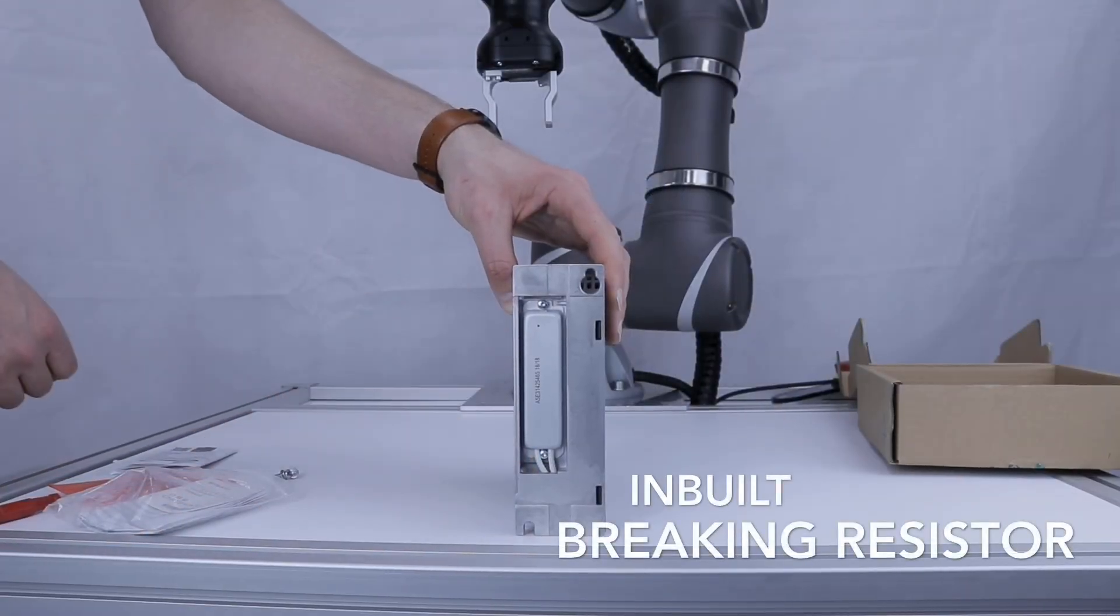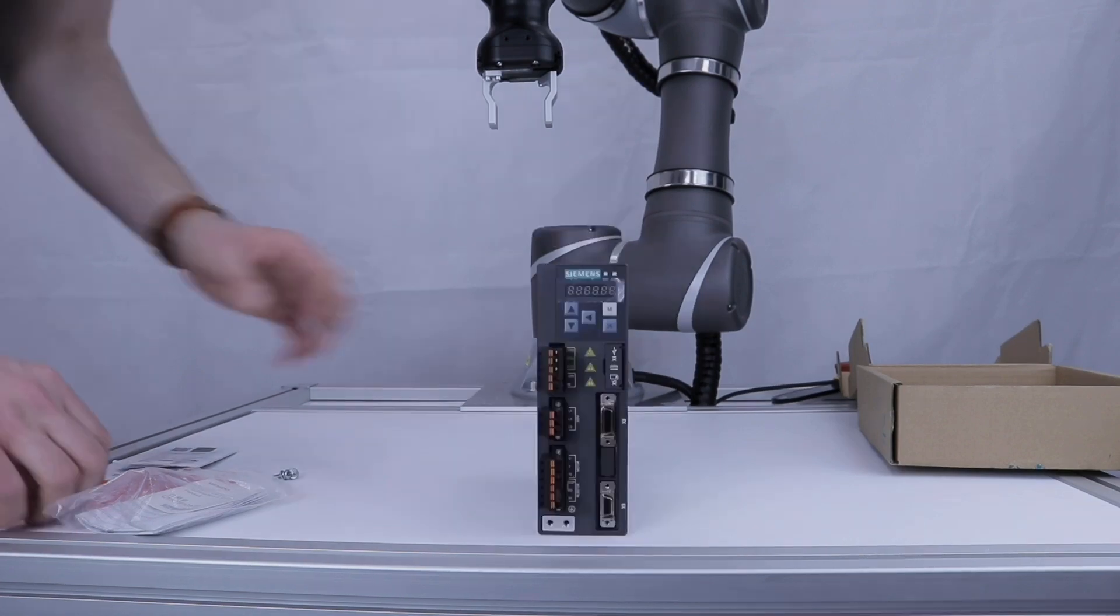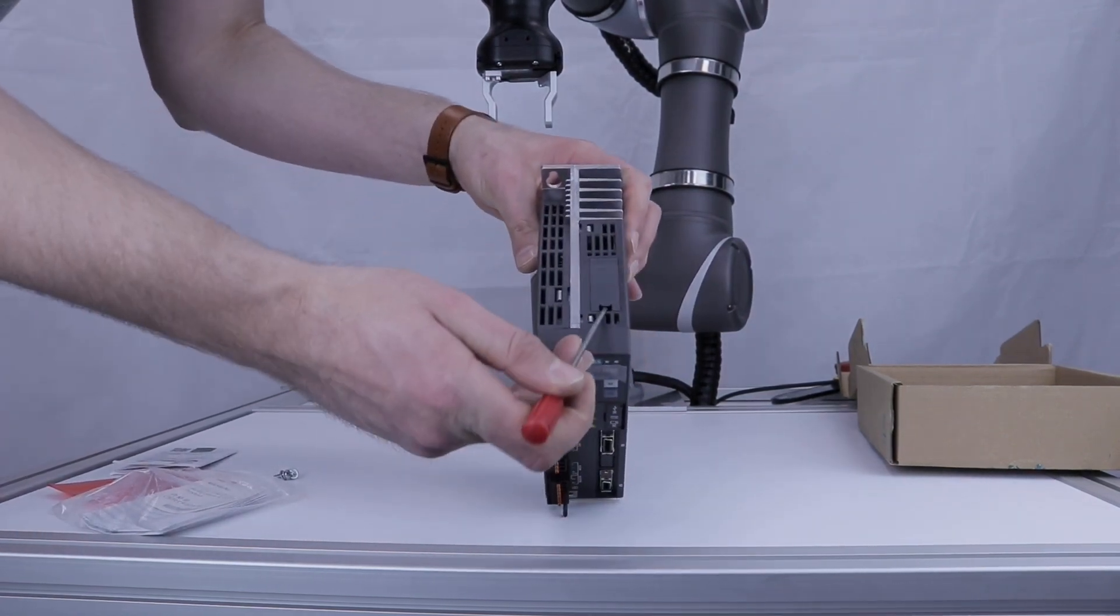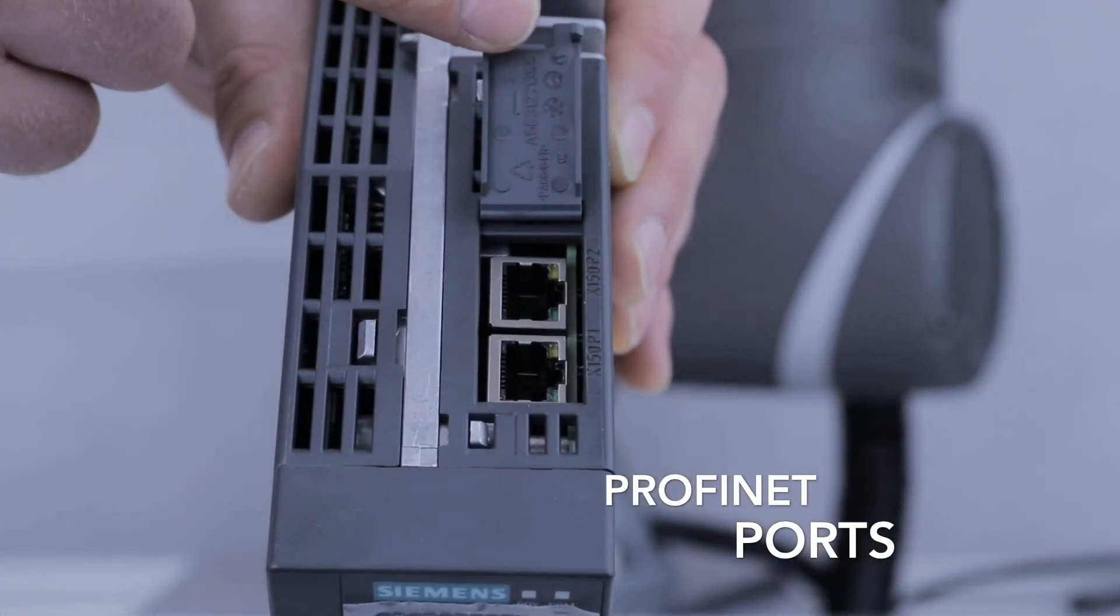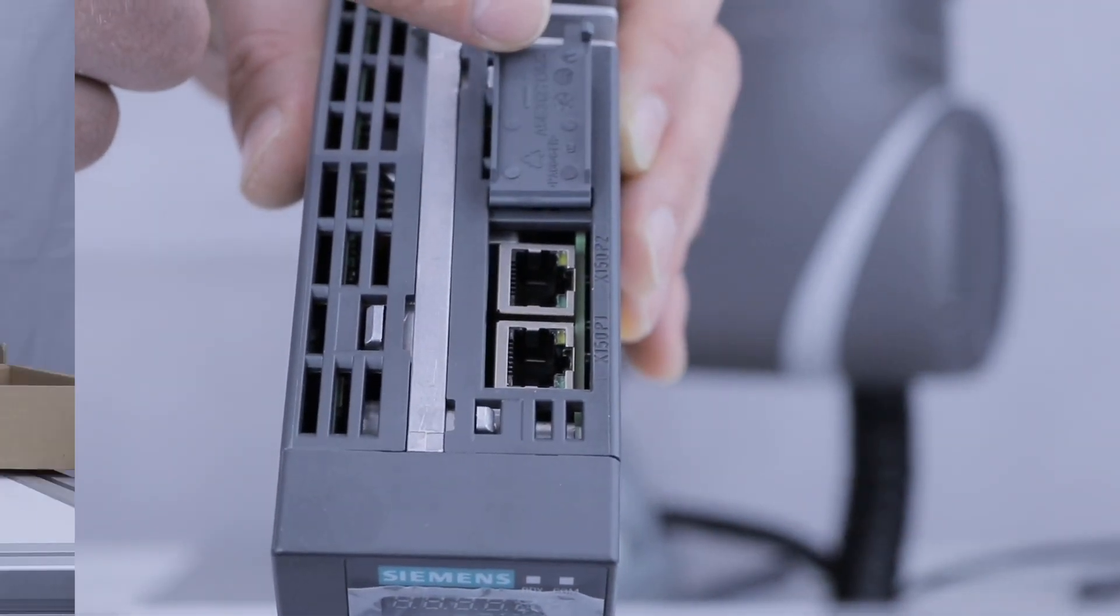This is the inbuilt braking resistor. It is found in the heat sink at the rear of the drive unit. The drive comes equipped with two PROFINET ports on top of the unit. These two ports are a single interface and therefore act as a switch.